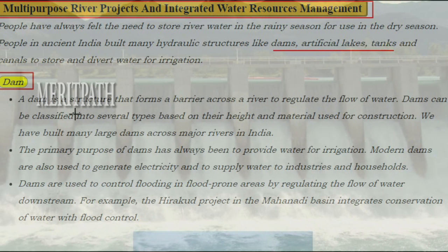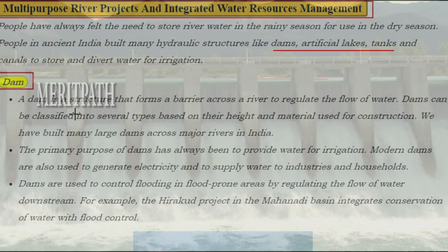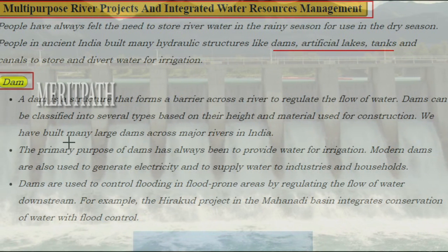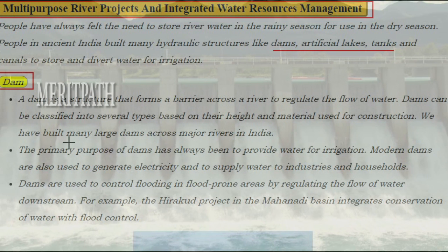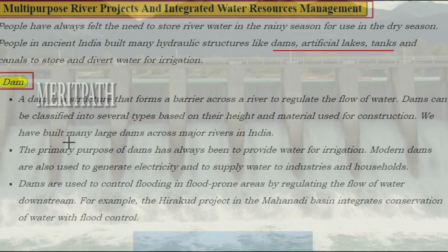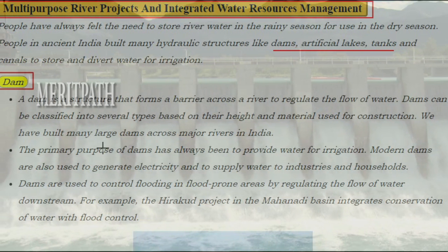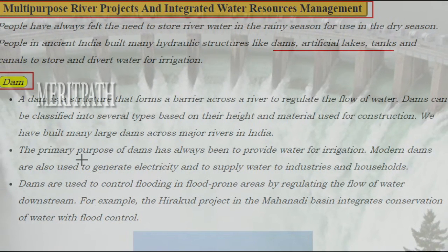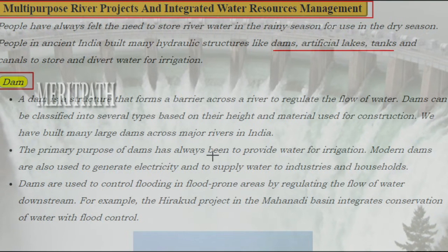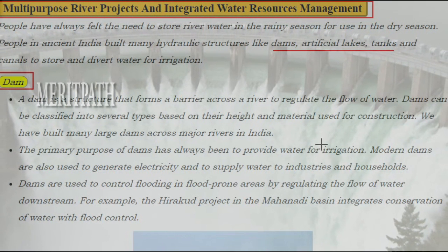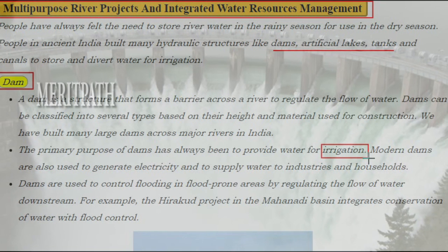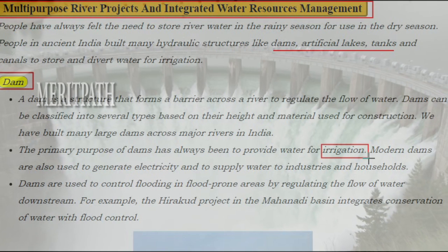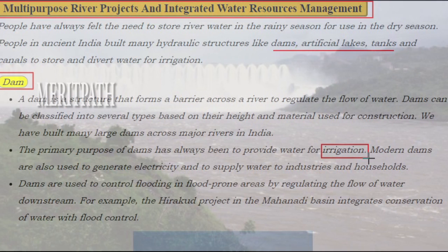A dam is a structure that forms a barrier across a river to regulate the flow of water. Dams can be classified into several types based on height and material used for construction. India has built many large dams across major rivers. The primary purpose of dams has always been to provide water for irrigation. Modern dams are also used to generate electricity and to supply water to industries and households.